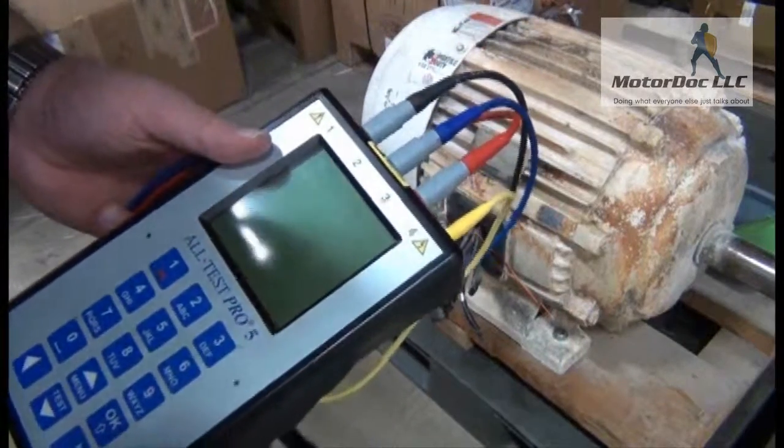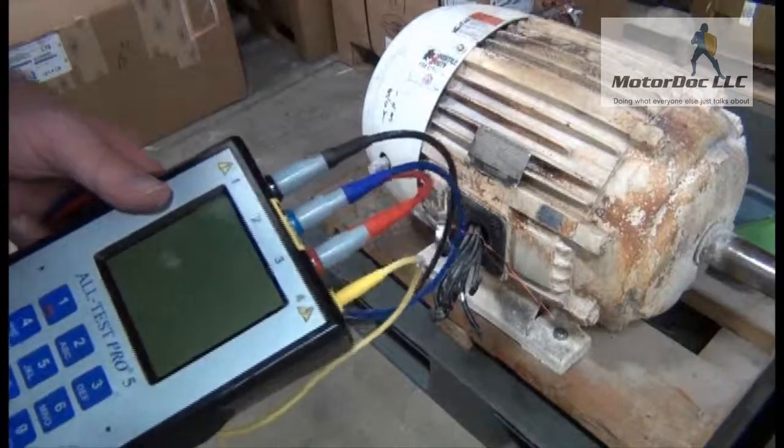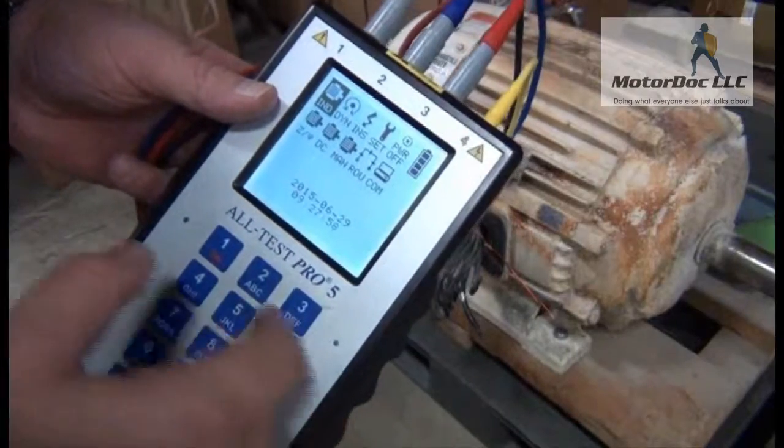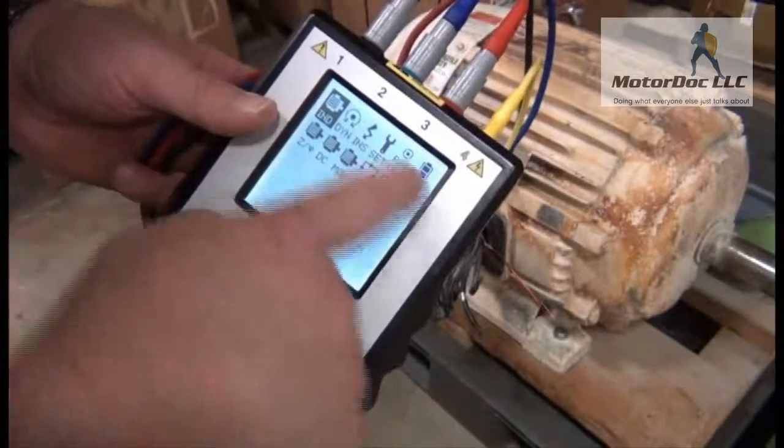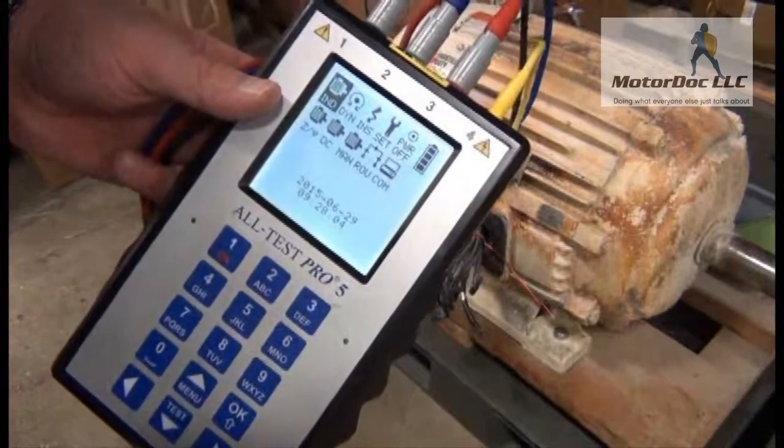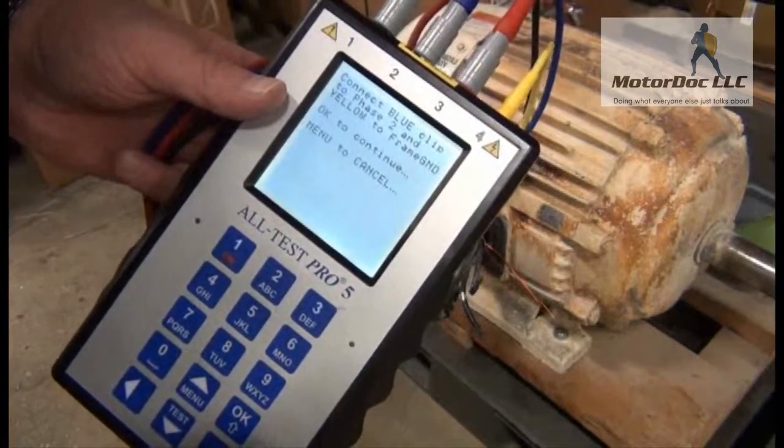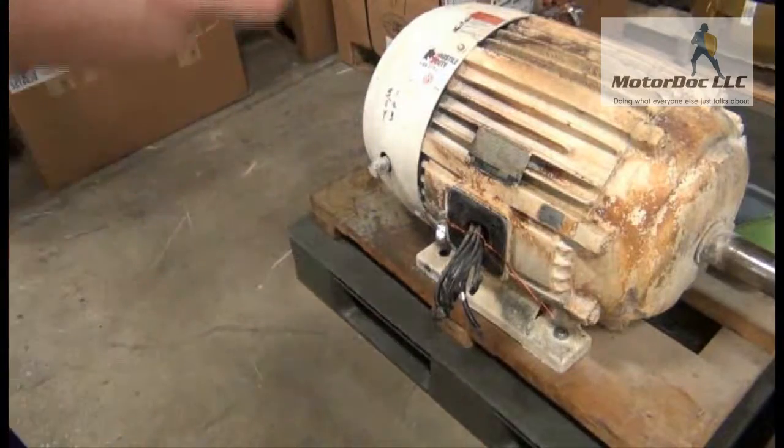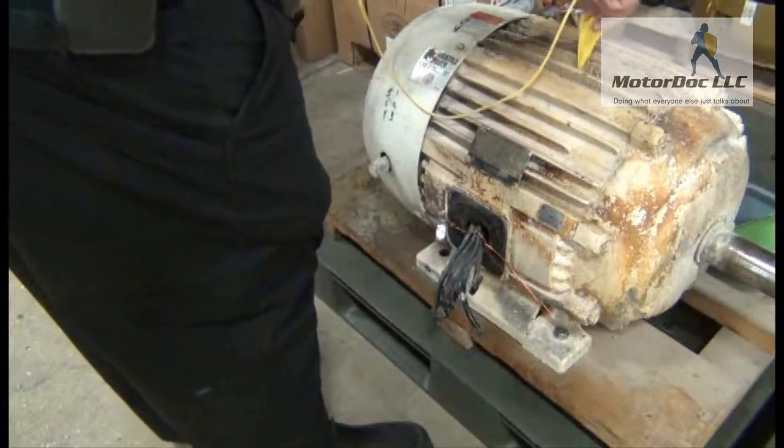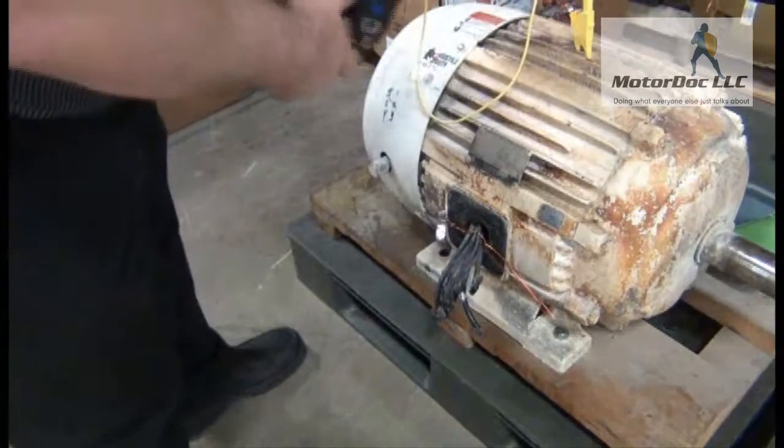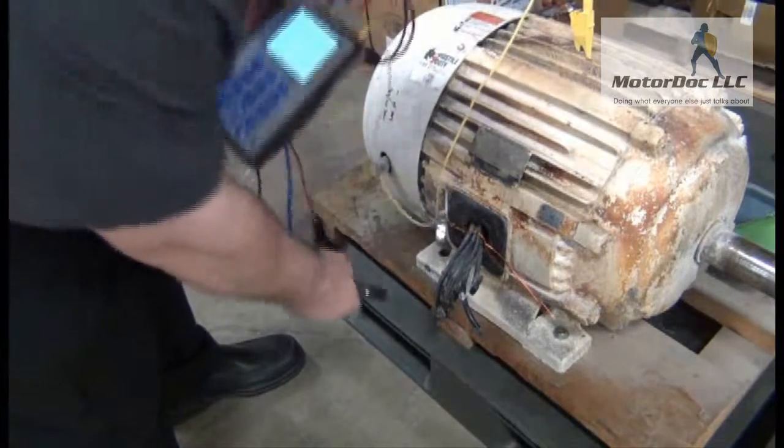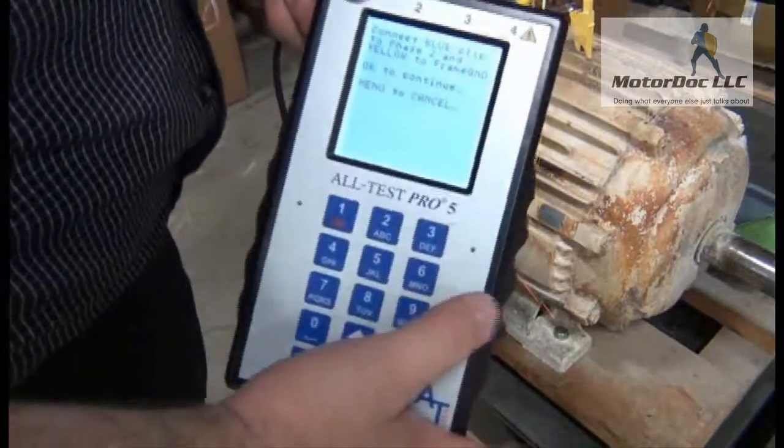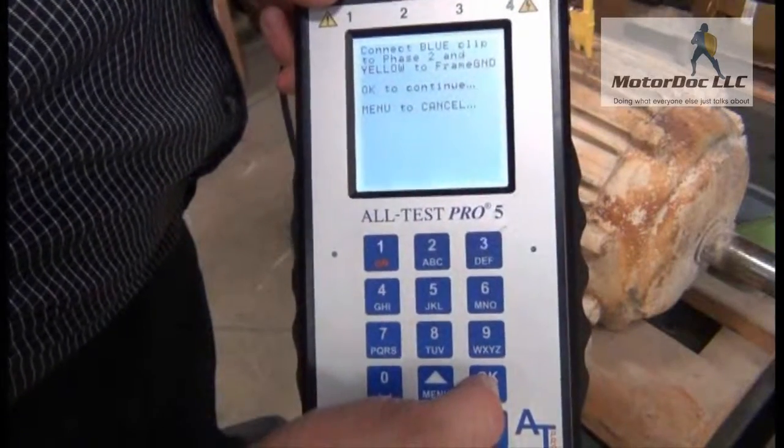So we're going to go ahead and test this motor with the Alt-Test 5. So the first thing we're going to do is turn on the unit, and we're going to run the measurements that would normally be done with the Alt-Test 33. So I press OK. What it says is to connect the blue clip to phase 2 and yellow to ground. So I go ahead and find a good ground, and the blue clip. I'll select the lead here.